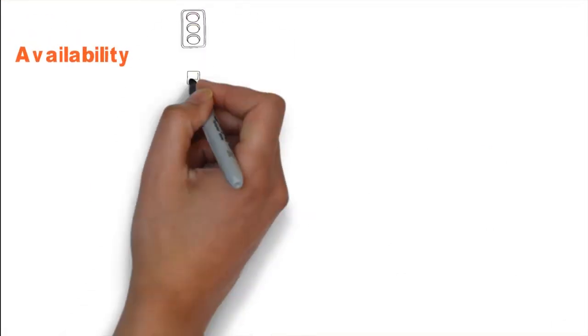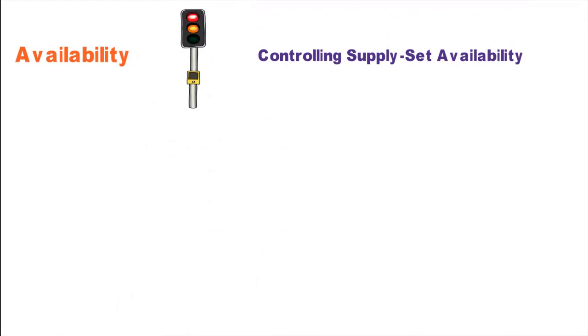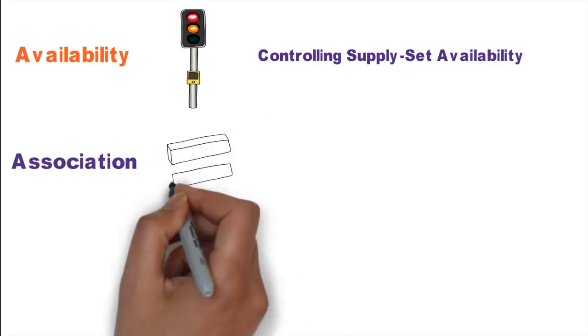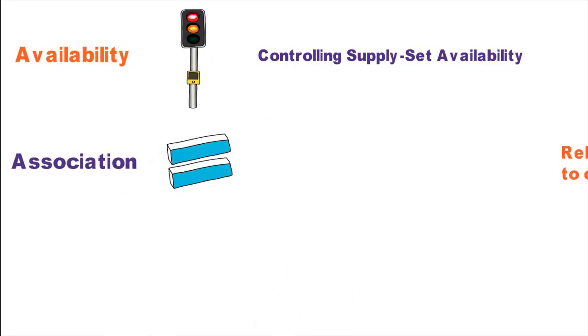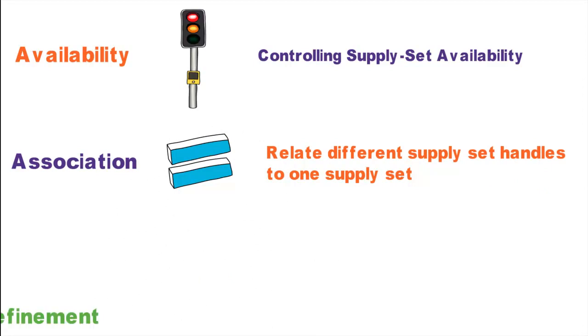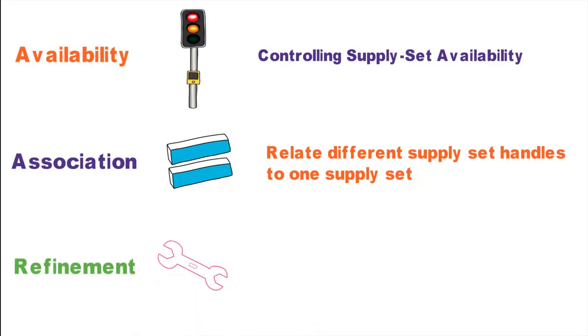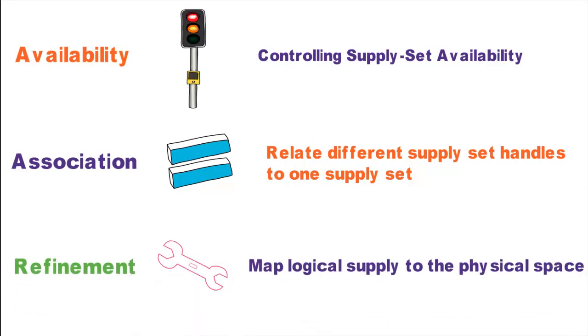There are three important concepts of supply sets: availability — controlling the availability of supply sets; association — associating a supply set or a handle to another supply set; and refinement — mapping a supply set function to the actual supply net.